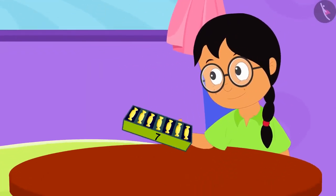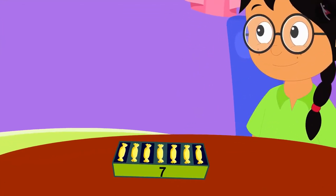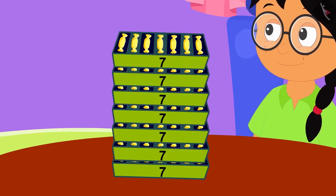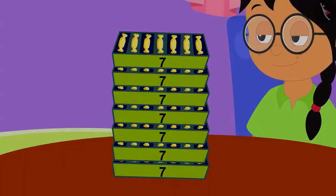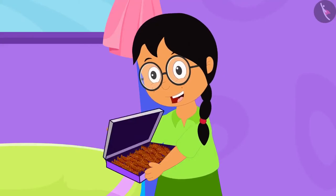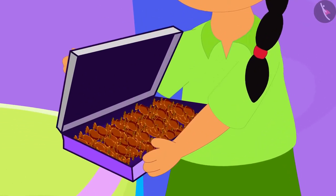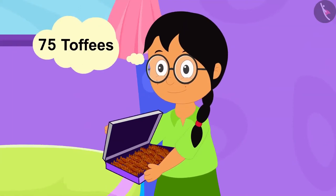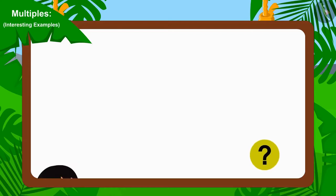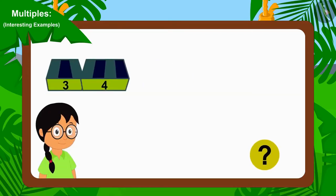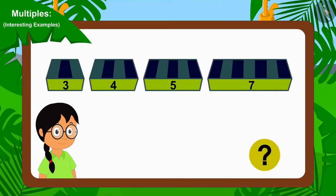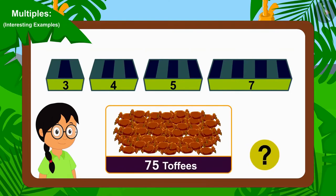Meenu quickly made a group of 7 toffees and filled 49 toffees in 7 boxes. Now, Meenu opened a chocolate toffee packet brought by her uncle. She found 75 toffees in this packet. Now, can you tell which of the groups of 3, 4, 5 or 7 can Meenu use to distribute these 75 chocolate toffees equally? If you want, you can stop the video and find the answer.